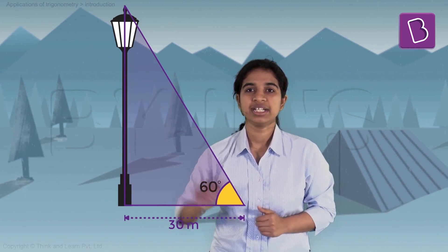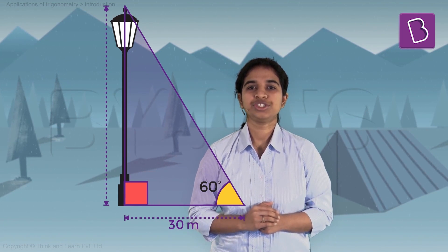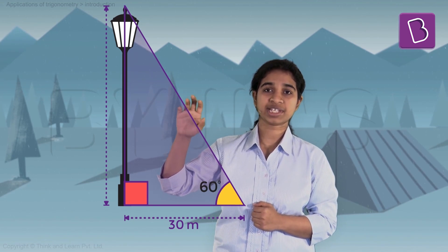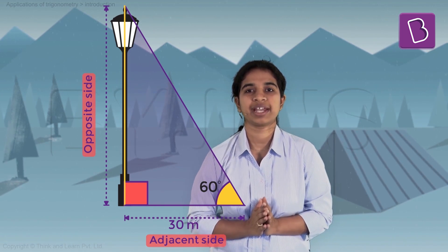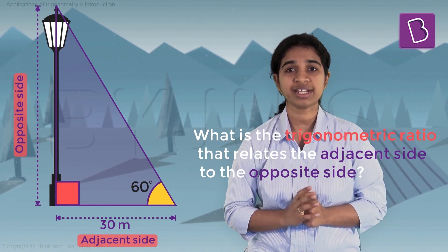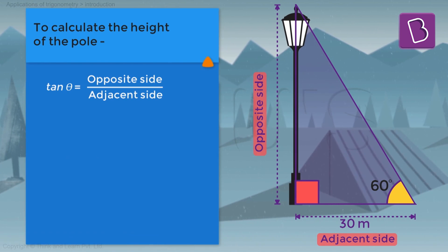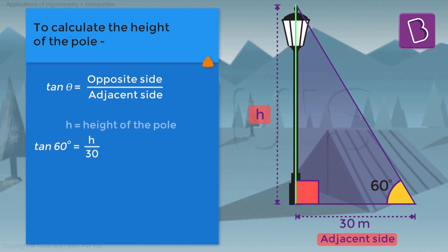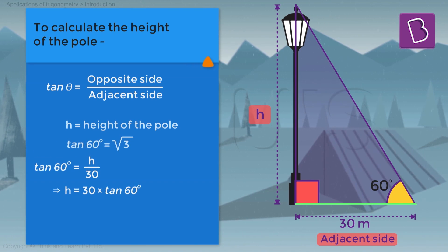So now we know this angle is 60 degrees and the base distance is 30 meters. In this right-angle triangle, with respect to angle theta, the base is the adjacent side and the height of the pole is the opposite side. The trigonometric ratio connecting the adjacent and opposite sides is tan theta. So tan(60) = h / 30, where h is the height of the pole.